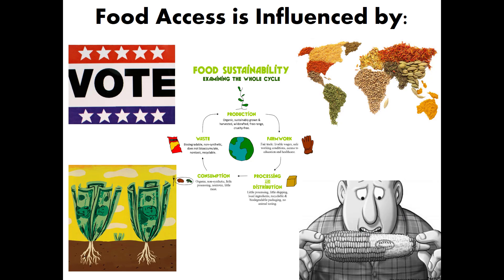Food access is influenced by numerous factors. First, food access is influenced by politics. We saw in the movie Food Stand that certain foods have been subsidized — helped being paid for by our federal government — and that reduces the amount that particular food will cost consumers. In that way it influences what we have more readily available access to. Also, some of our trade laws enhance our access to different types of foods that might not necessarily be grown here in the United States. We see a picture of different globes and different types of seeds, spices, and foods grown in different parts of the world.